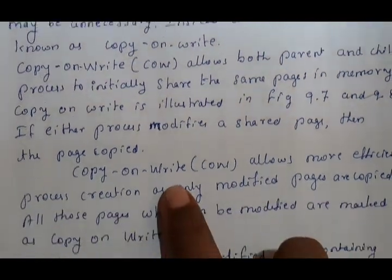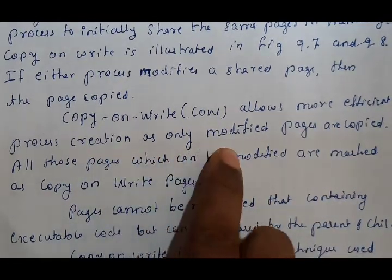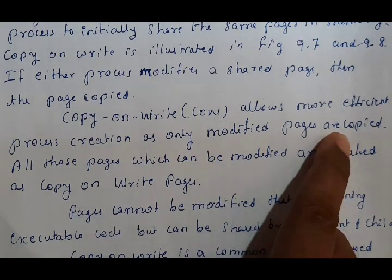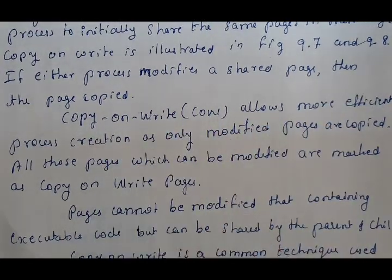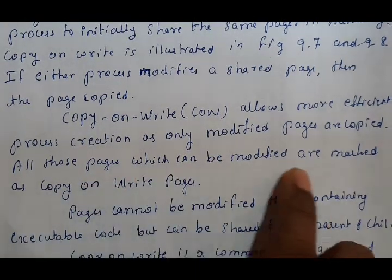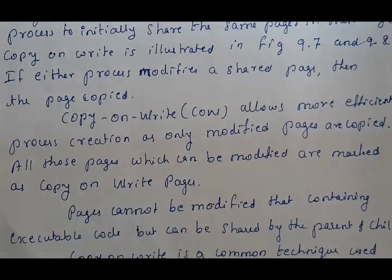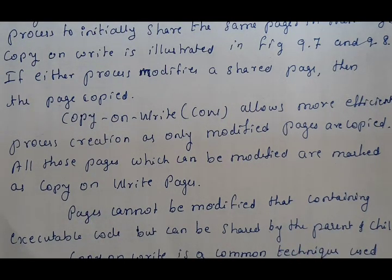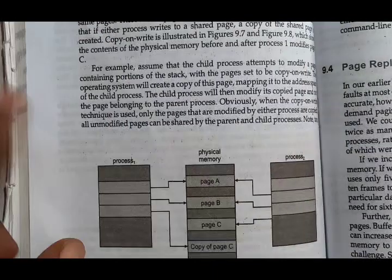Copy-on-Write allows more efficient process creation, as only modified pages are copied. In the fork method, everything is copied, but with Copy-on-Write only modified pages are copied to the child process. All pages which can be modified are marked as Copy-on-Write pages.